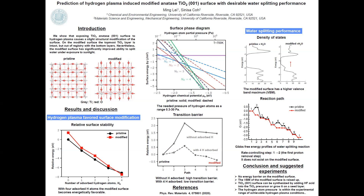Next, we turn to calculating the transition barrier between the pristine and modified surface. The solid line is the transition path between the pristine and modified surface without absorbed hydrogen atoms. The dashed line is about the transition of the surface with full hydrogen atom absorption. Without hydrogen atom absorption, the transition barrier is very high. However, with full hydrogen atom absorption, the transition barrier decreases to about 0.5 eV per surface unit cell, which means this transition can happen in the experiment.